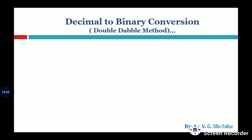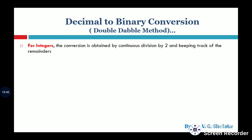Now we will see how to convert a decimal number into its equivalent binary number. This method is also called the double-double method. In the examination, there may be a question asking you to explain the double-double method. Any number has two parts: the integer part and the fraction part. For the integer part, we successively divide by 2 and keep track of remainders.